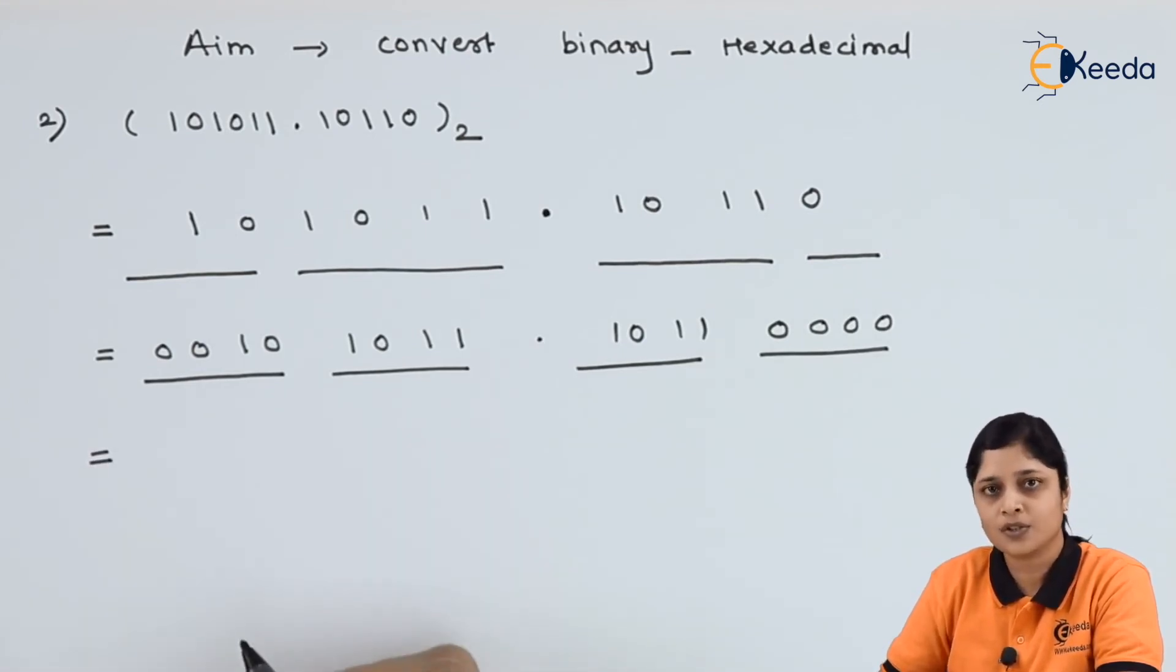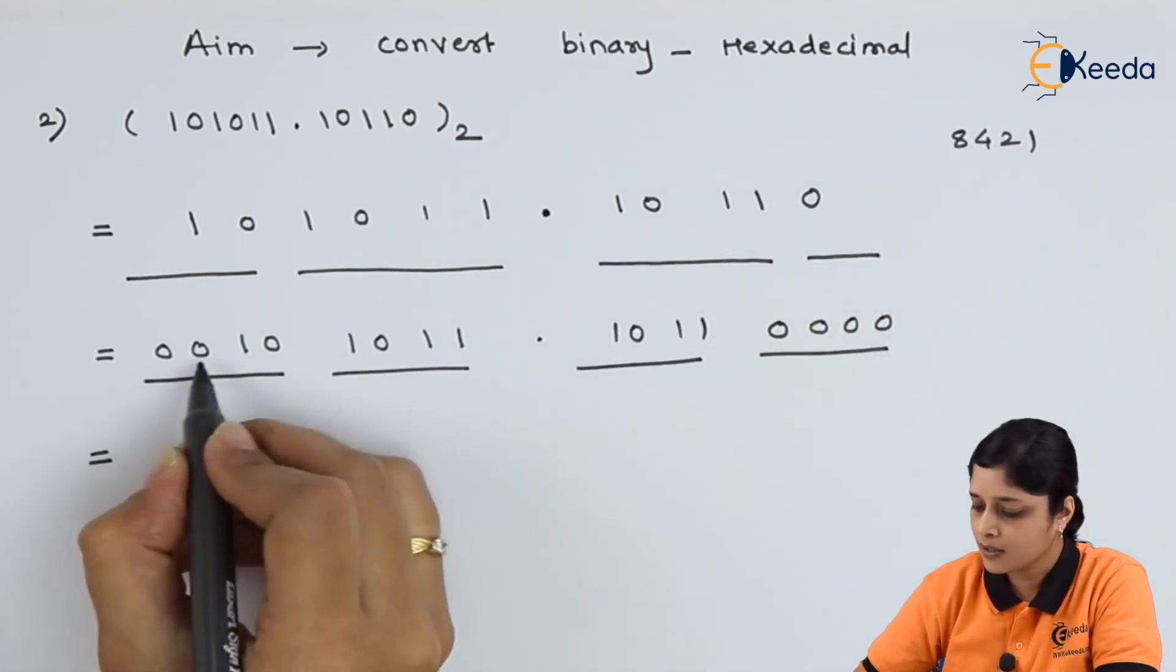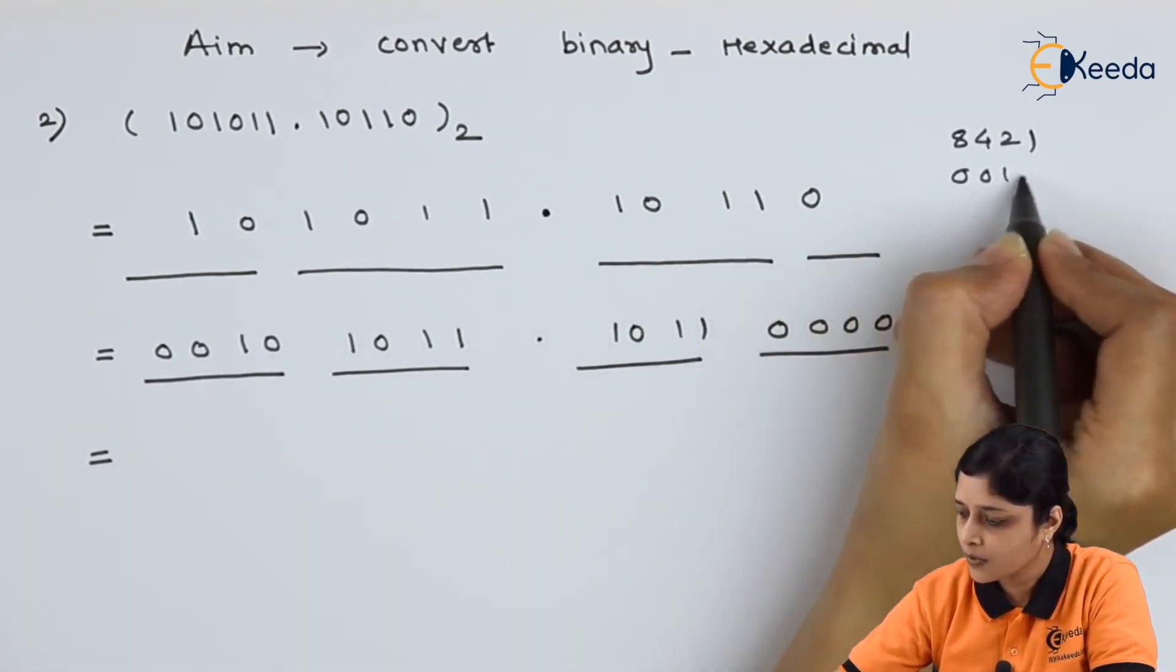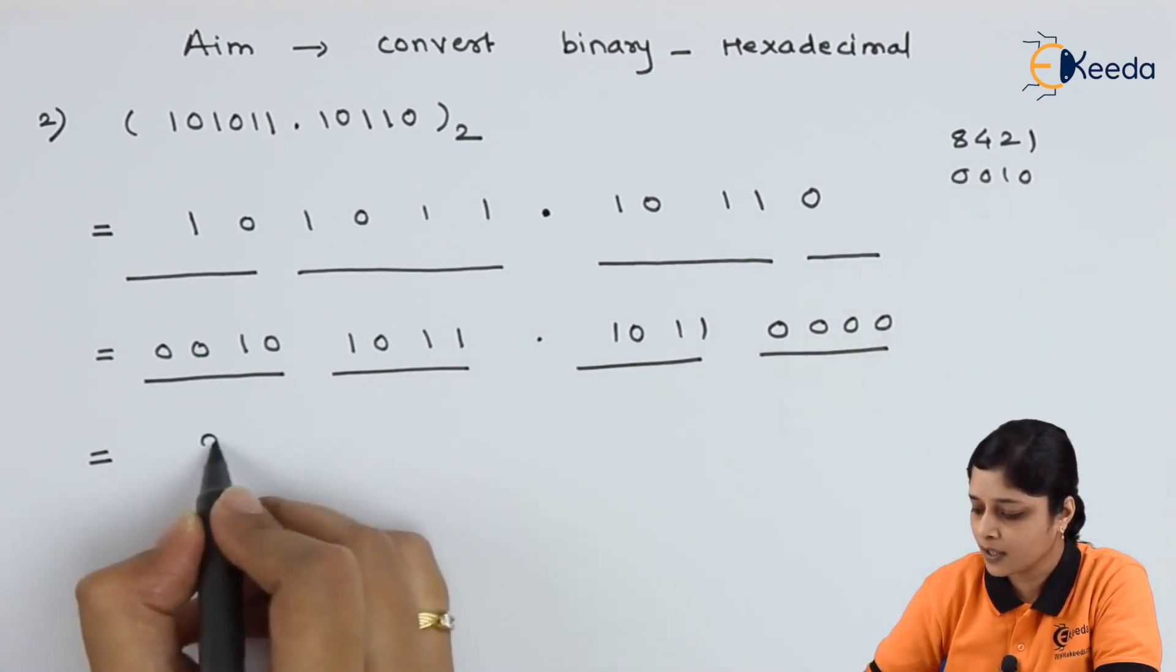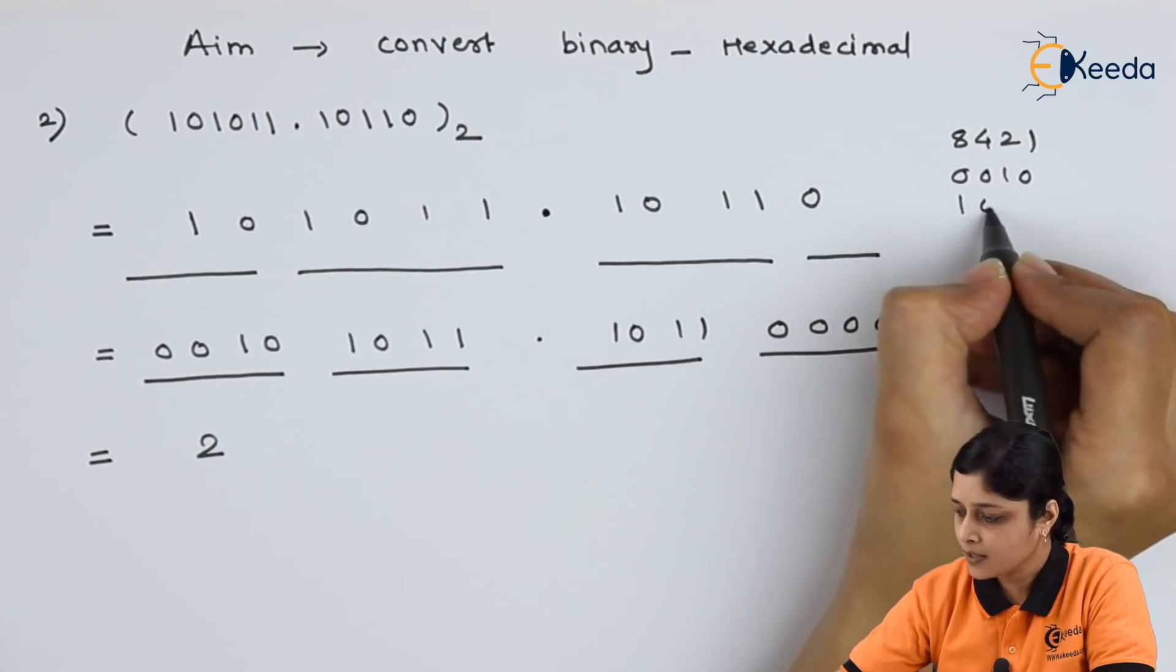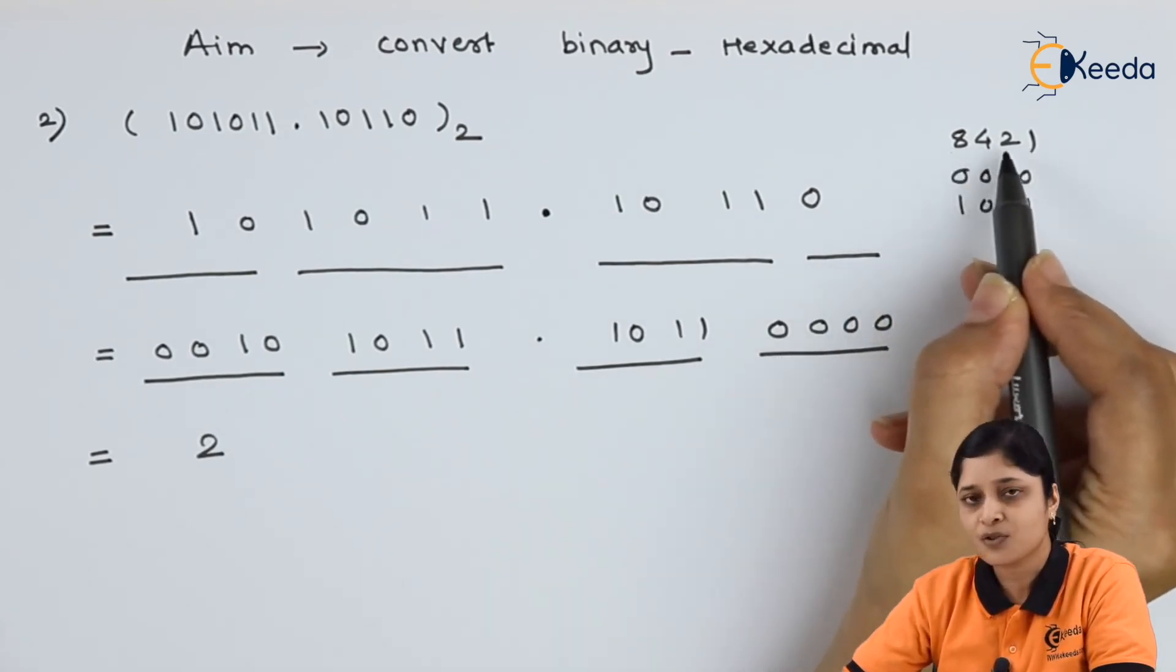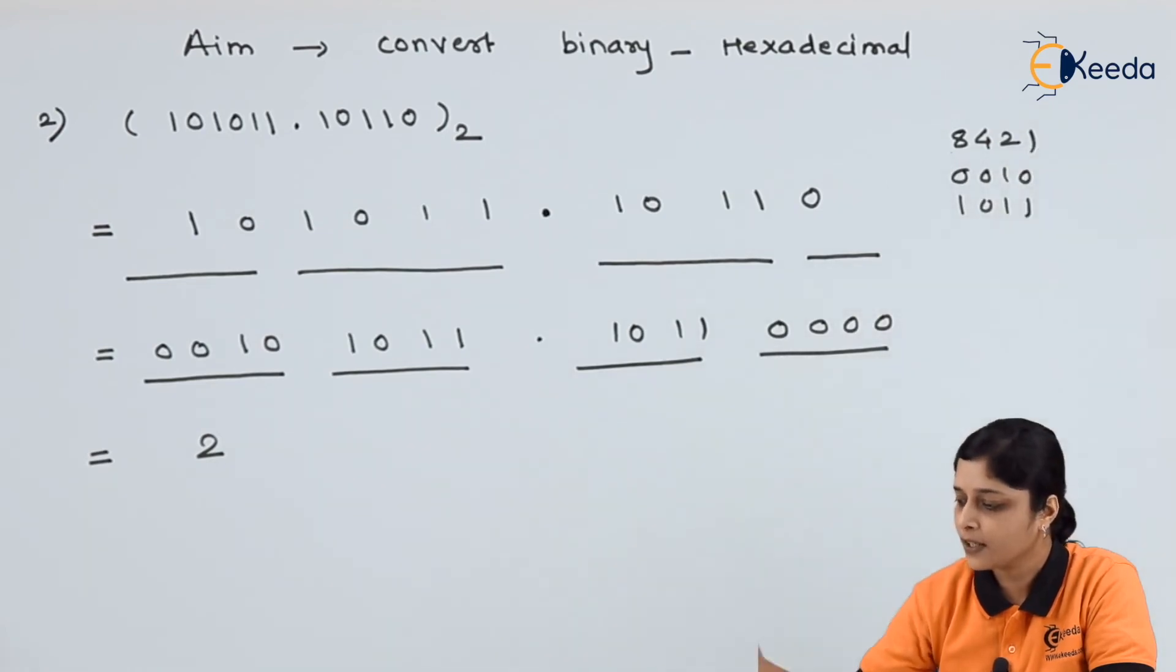Now conversion to the hexadecimal. Again write down 8, 4, 2, 1. 0, 0, 1, 0. 0, 0, 1, 0. 1 is here. That's why conversion is 2. 1, 0, 1, 1. 8 plus 2 plus 1. 8 plus 2 is 10. 10 plus 1 is 11.